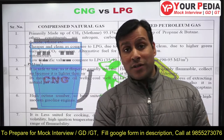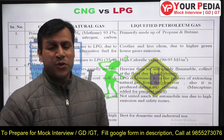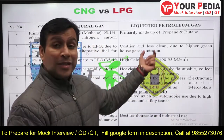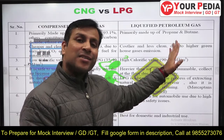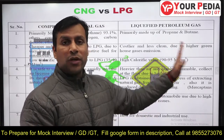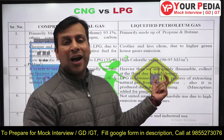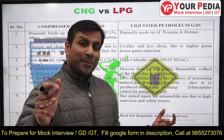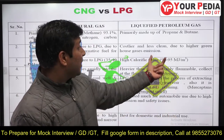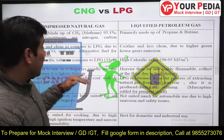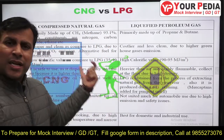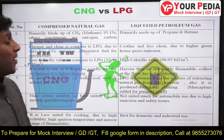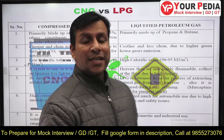CNG is lighter than air, so it disperses very quickly and easily, making it very safe to use in automobiles. LPG, on the other hand, is heavier than air, so it is not as safe. When using LPG, CO2 emission is present. Compared to petroleum products like petrol and diesel, LPG does have lower carbon emissions, but compared to CNG, the CO2 emission is higher. CNG has less CO2 emission, making it a greener gas.